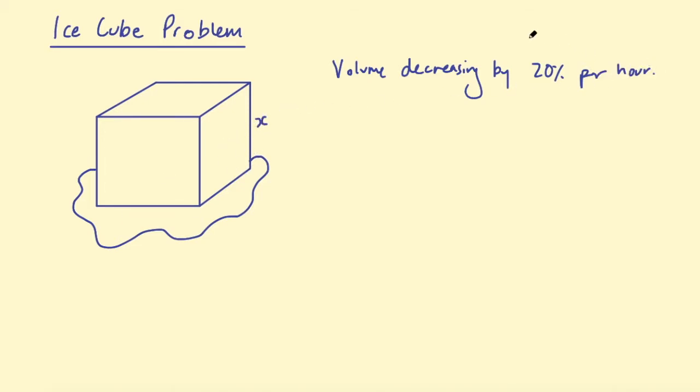So it's melting away pretty slowly. I guess it's still pretty cold, maybe a couple of degrees above zero, so it's melting pretty slowly. And we're told that the volume after four hours is 51.2 centimeters cubed.